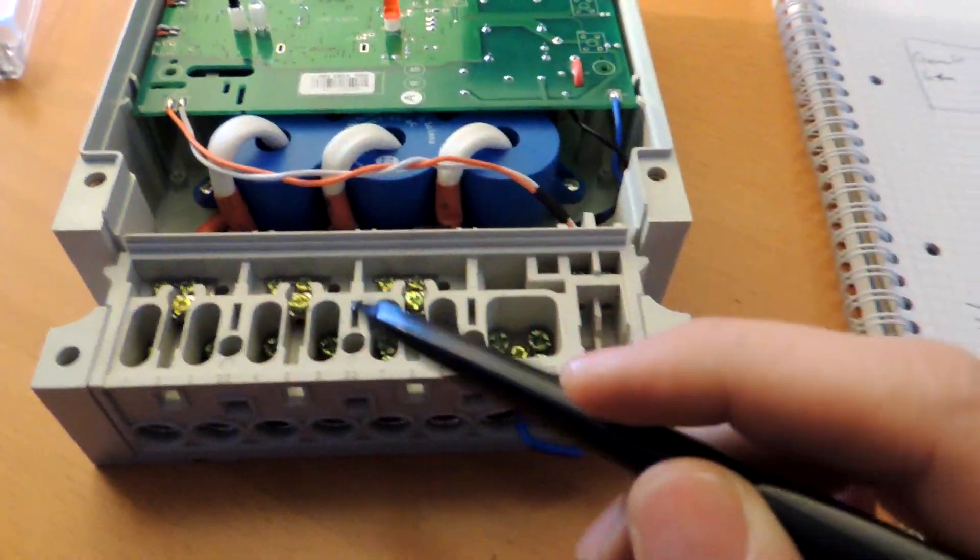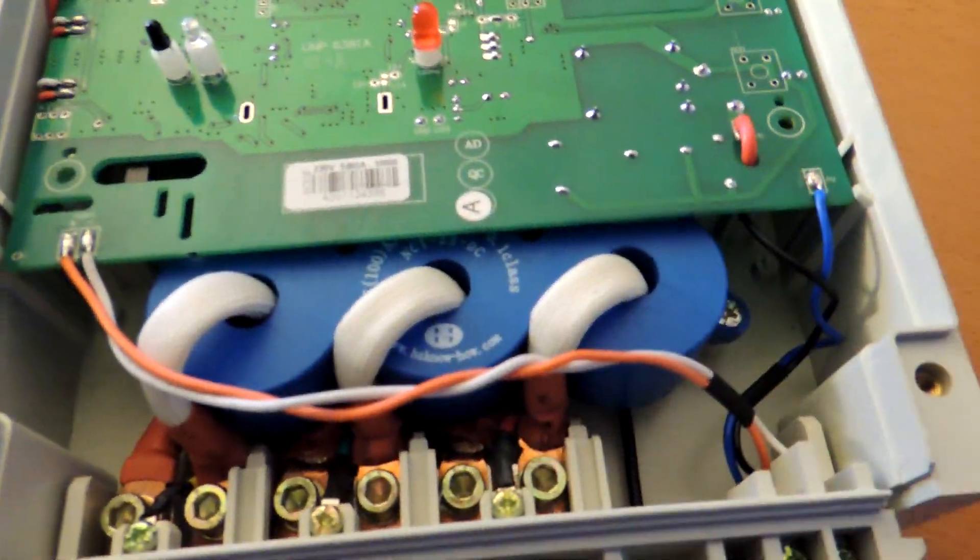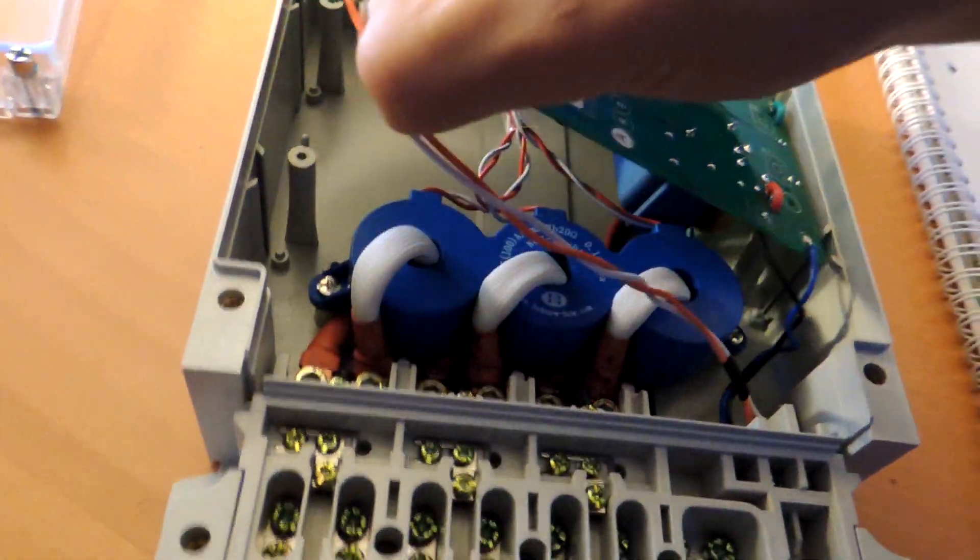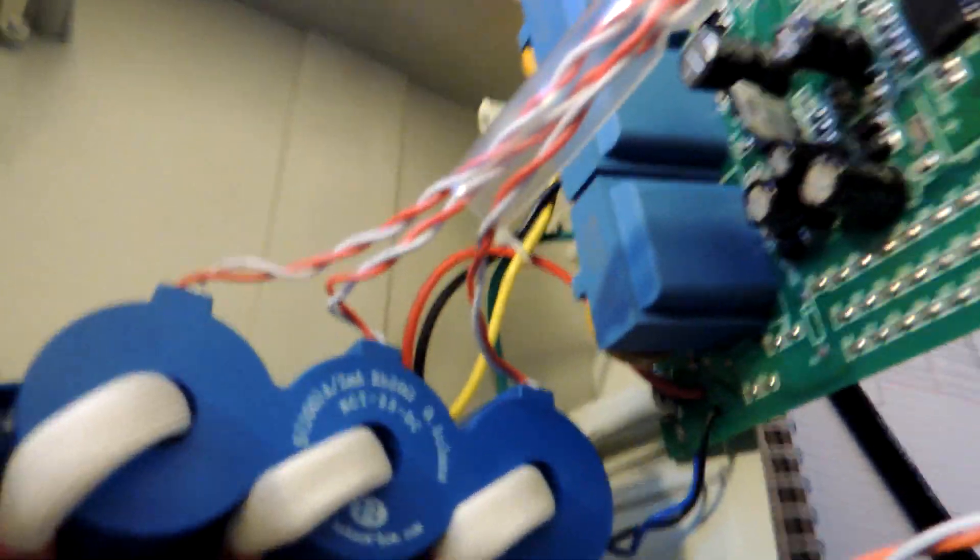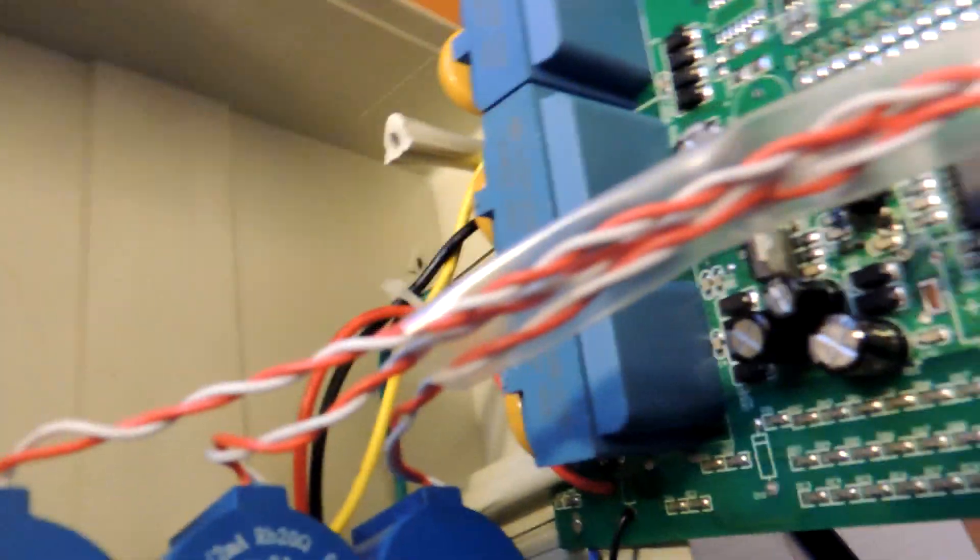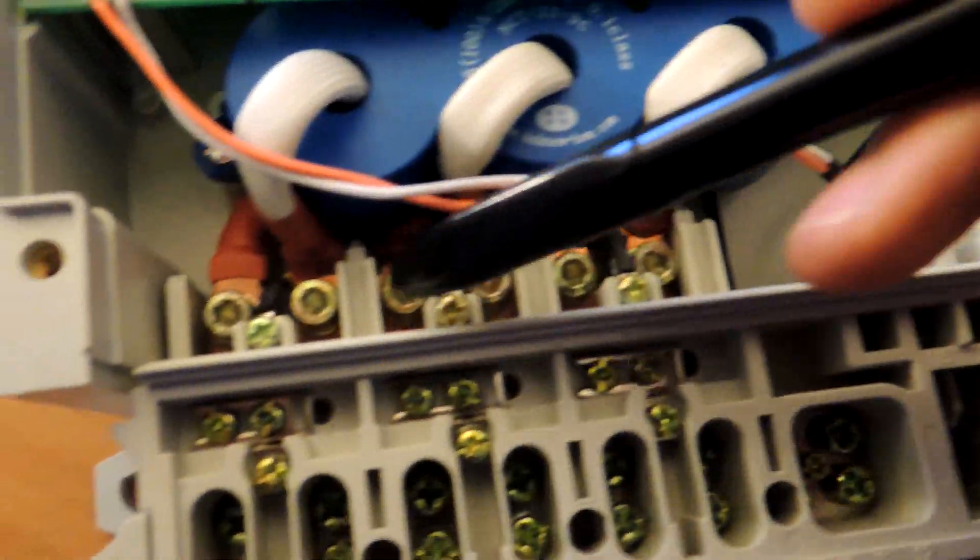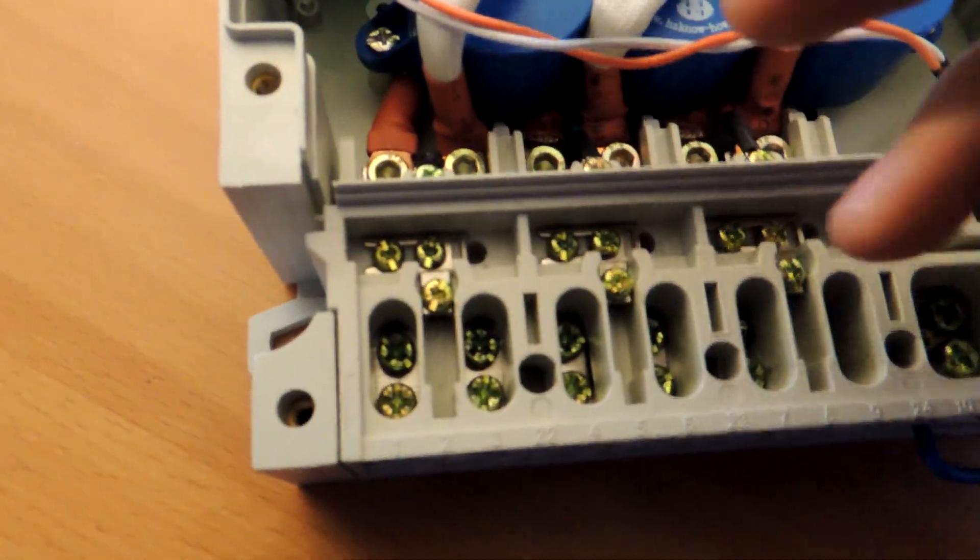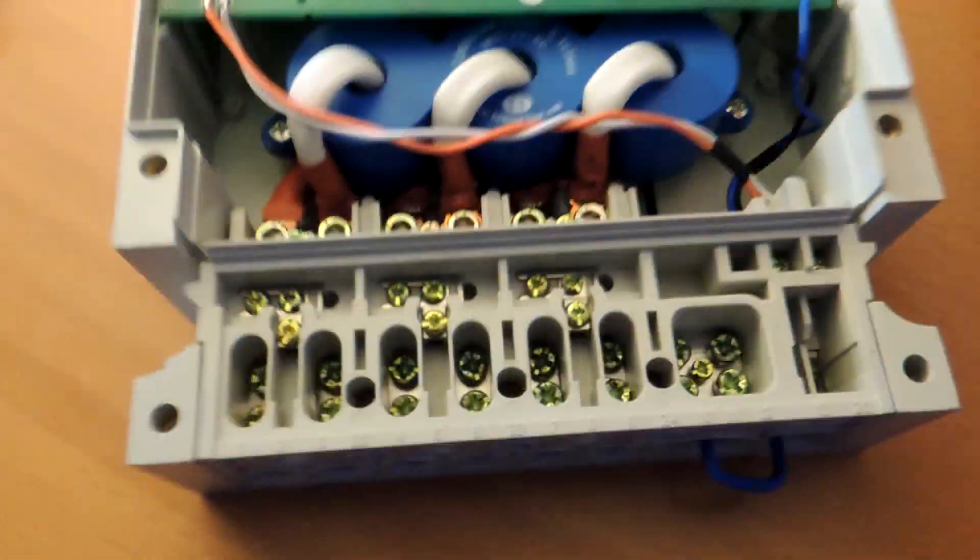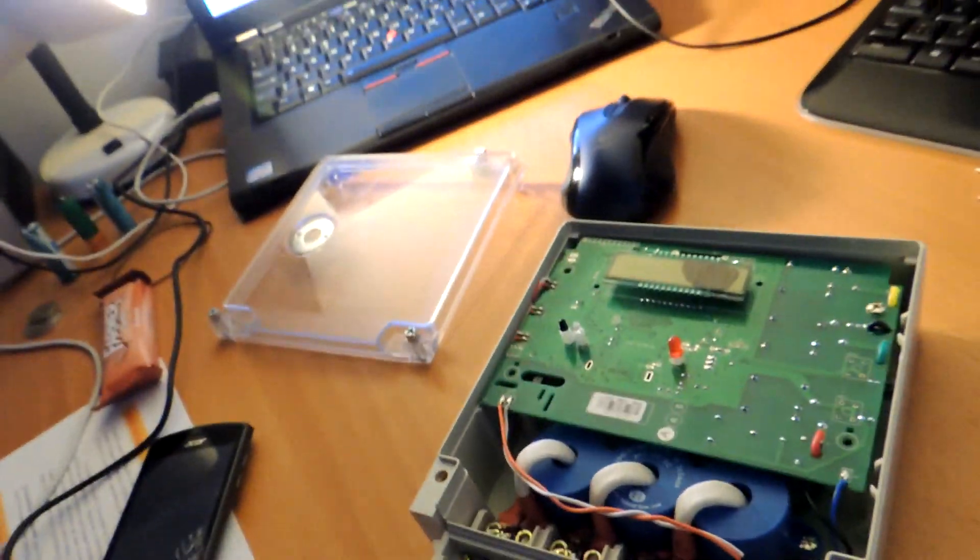So it senses the current there with the transformers, and the three cables you can see there, the cables go here to the little yellow, black cables. The cables go there and they can sense the voltage, so the meter knows the current, the voltage, and can do its thing to operate well.